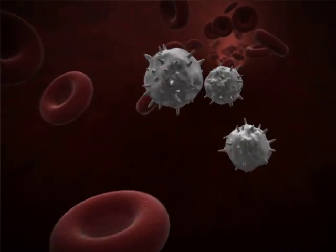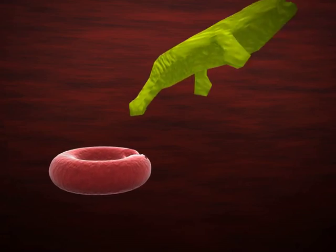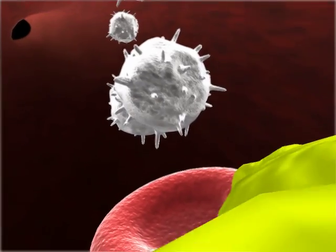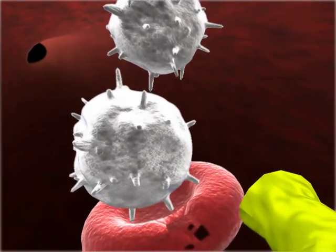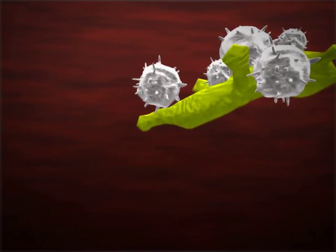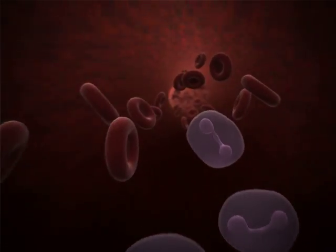Lymphocytes are white blood cells that act as the first line of defense against tumors and viruses. Neutrophils are another type that works to prevent infection and disease.